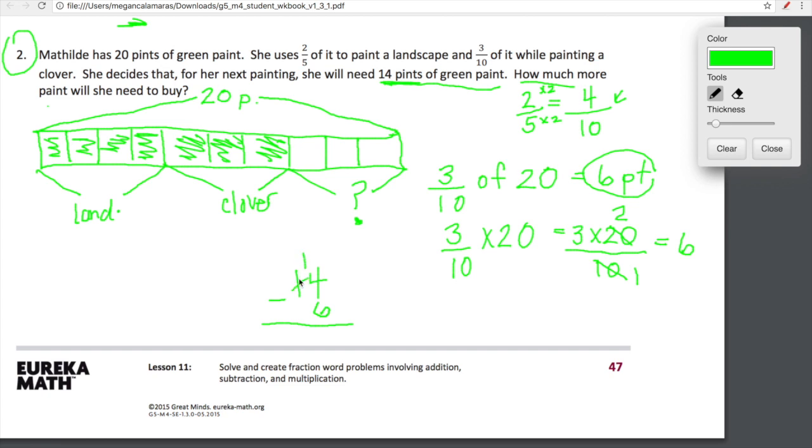Oh, Georgie. Sorry, guys. Georgie's just choking on something. You're okay though, right, baby? He just wanted in on this. 14 minus 6 is equal to 8. She's going to need to buy 8 more pints of paint.